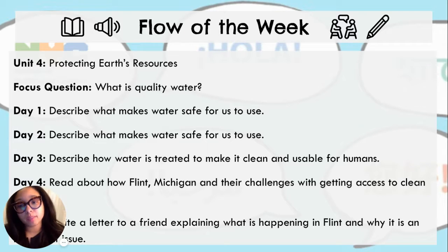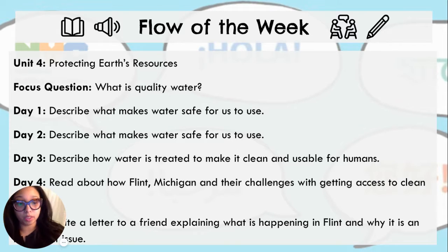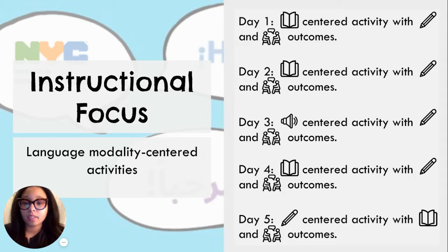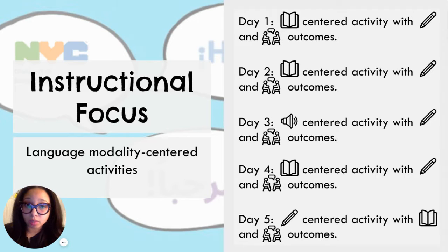On day 5, students are expected to write a letter to a friend explaining what is happening in Flint, Michigan and why it is an important issue. It is important to keep in mind that while each day has a content objective, the instructional focus may look slightly different for multilingual learners or English language learners.